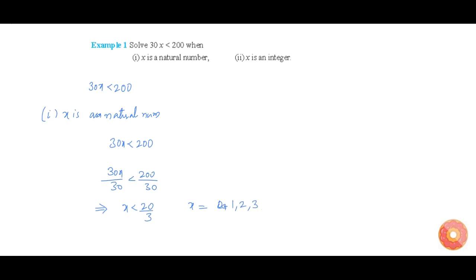Now we shall consider x is an integer. x is less than 20 by 3 and x is an integer, so the value of x should be minus infinity to 0, 1, 2, 3, 4, 5. These are the values of x for x as an integer.